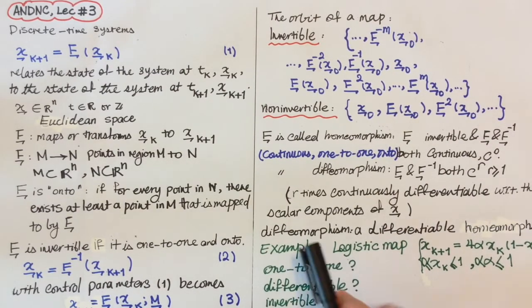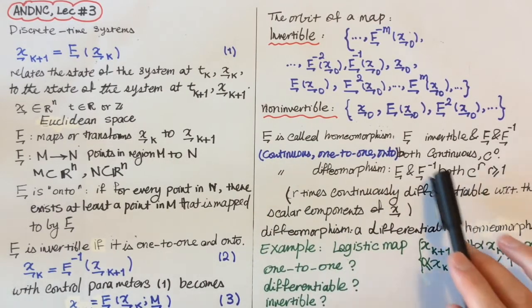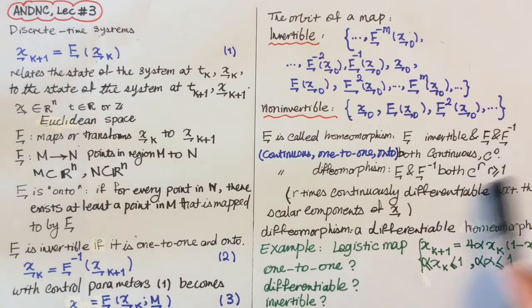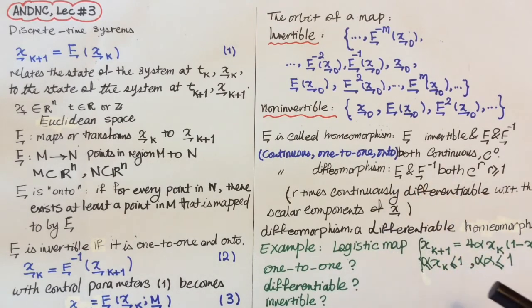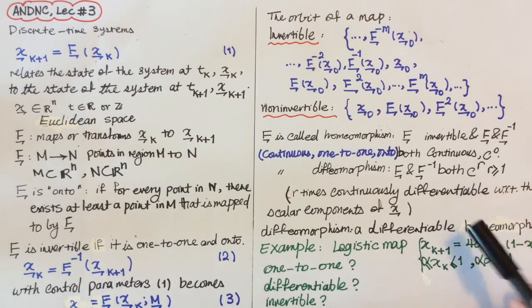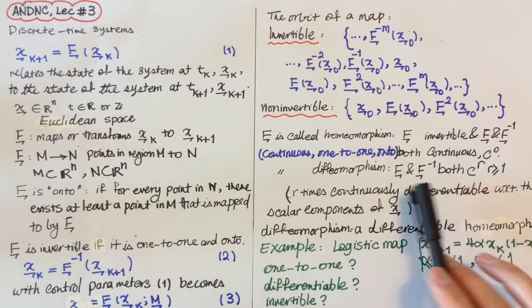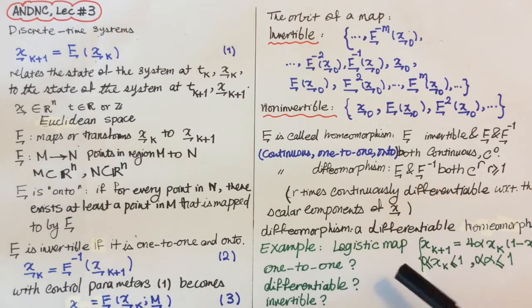A couple other things: F is called homeomorphism if F is invertible, so F and F inverse are continuous one-to-one and onto. Both are continuous. When we say continuous, it means we call it C^0. But if it is differentiable, meaning that it is continuous for higher orders, then it is called diffeomorphism.